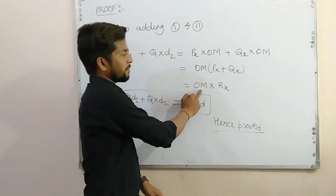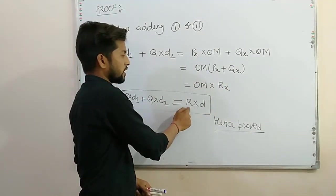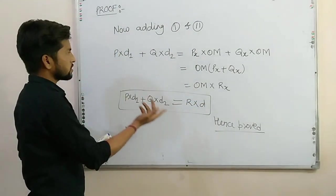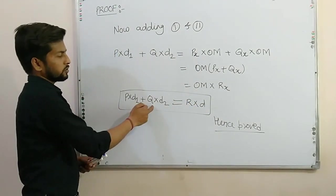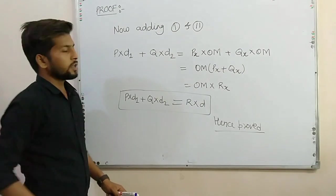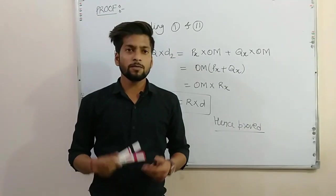And the value of OM and Rx we have seen. This is R into D. So this is the proof. P into D1 plus Q into D2 equal to R into D. This is the proof of Varignon's theorem. Thank you guys.